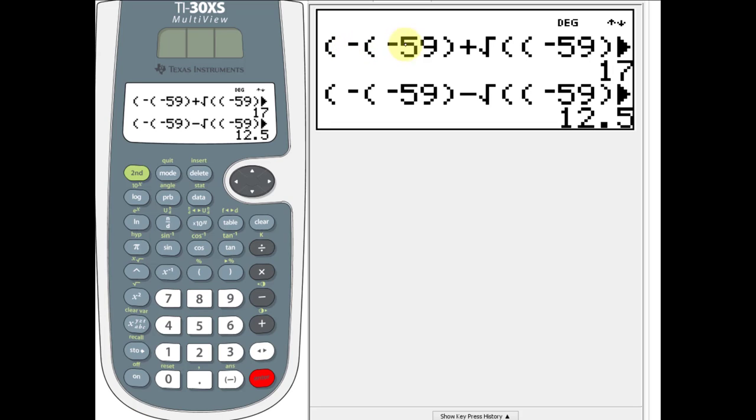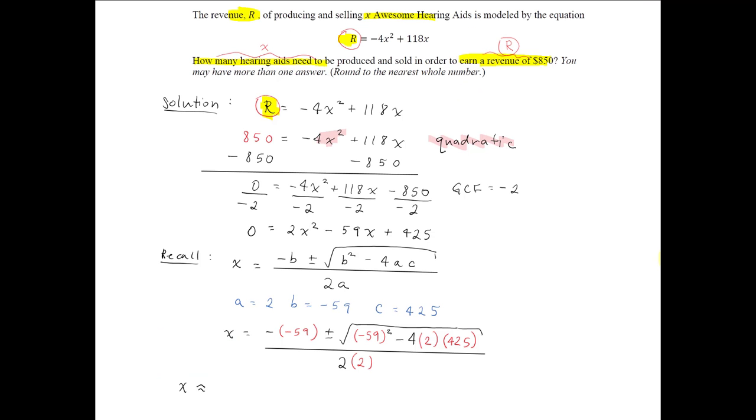I went ahead and inputted each solution. Recall that we have plus or minus, meaning we have negative b plus the square root of b squared minus 4ac over 2a, and then we have negative b minus the square root of b squared minus 4ac over 2a. So I'll put in the plus and then the minus and get two different solutions.